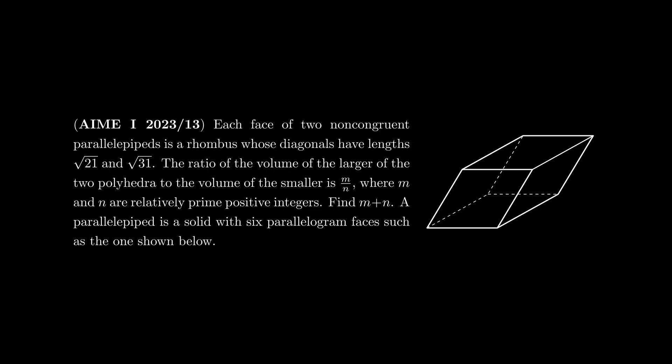Problem 13. Each face of two non-congruent parallelopipeds is a rhombus whose diagonals have lengths √21 and √31. The ratio of the volume of the larger of the two polyhedra to the volume of the smaller is m/n, where m and n are relatively prime positive integers. Find m+n.